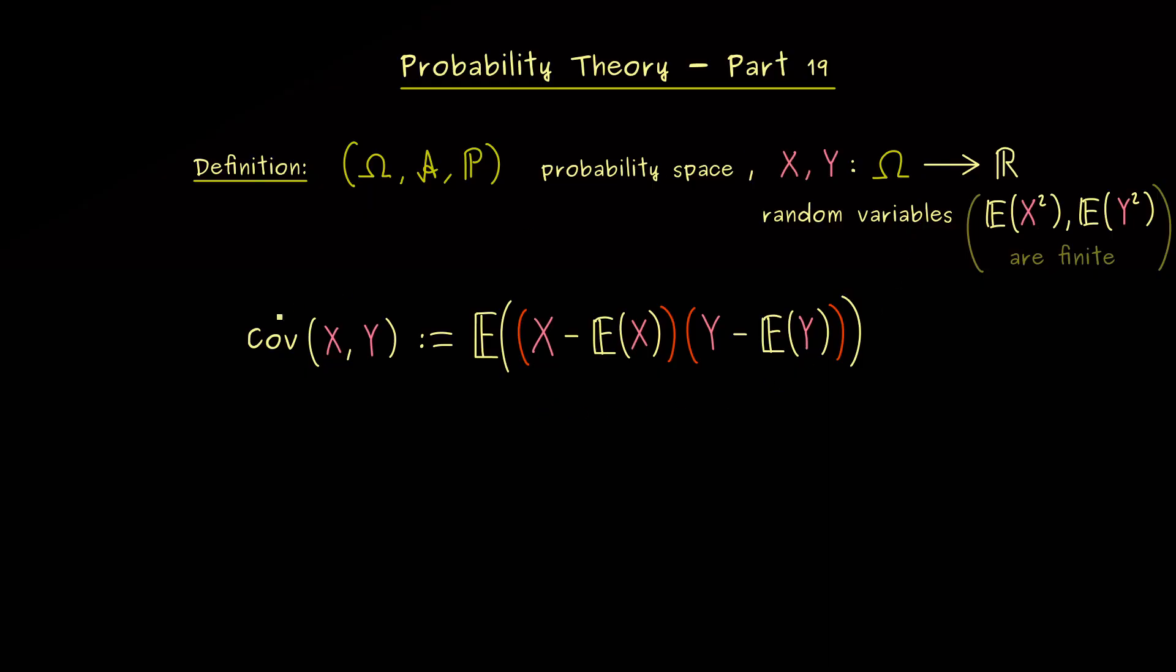So what comes out for the covariance is again a real number. However, here please note, in general this could be definitely also a negative number. And this is in contrast to the normal variance. However, similar to the ordinary variance, we can reformulate this formula here.